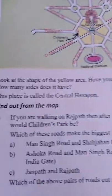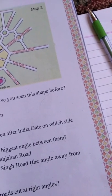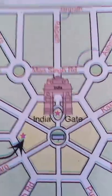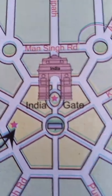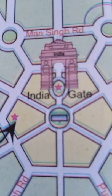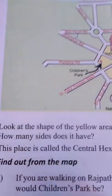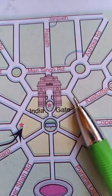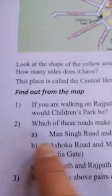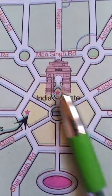Look at the shape of the yellow area. Have you seen this shape before? You see the yellow shape — this is a hexagon. How many sides does it have? One, two, three, four, five, six sides. Hexagon has six sides. This place is called the central hexagon. The yellow shape you see is the central hexagon.